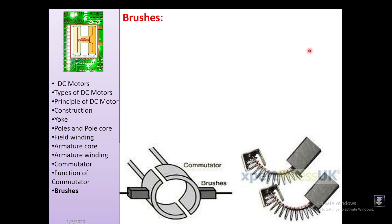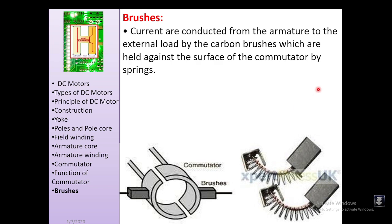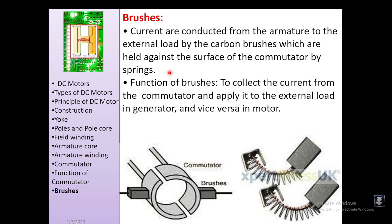Brushes are held against the surface of the commutator by springs. They conduct current from the armature to the external load, or from the external load to the armature. In generator mode, brushes collect current from the commutator and supply it to the external load. In motor mode, external current is supplied through the brushes to the commutator and then to the armature. Brushes are generally made of carbon and are rectangular in shape.